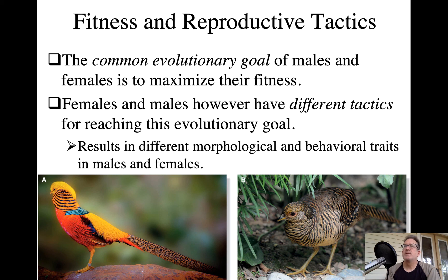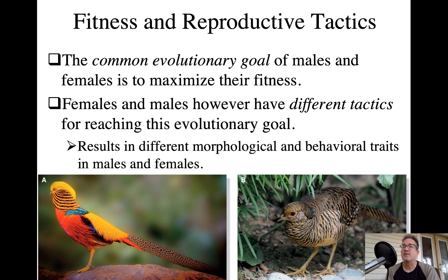To understand the different approaches that males and females take to gaining reproductive success, we need to first see that they really do have the same evolutionary goal: to maximize their fitness. Fitness refers to how many copies of your genes you're passing on to the next generation. They both have very different tactics in achieving this goal, which leads to sexual dimorphism and sexual dichromatism.